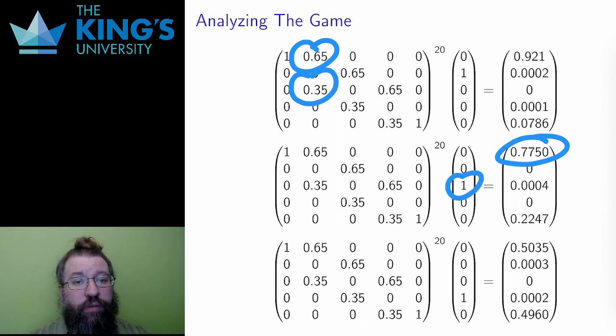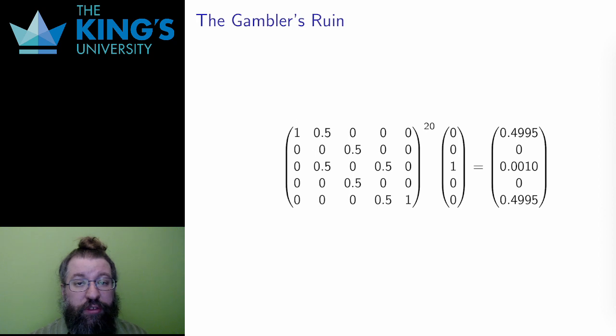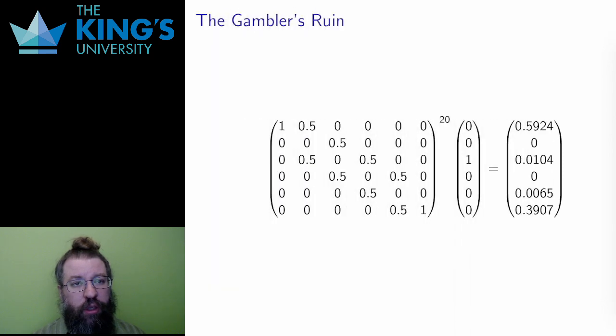Now let me return to the fair game, with W and L both at 0.5. Instead of changing the fairness of the game, I'm going to change the stopping condition. Let's say players always start with two stakes, but I'll change the number of stakes at which the player stops playing. In the original game, having two stakes led to a winning percent of 50% overall.